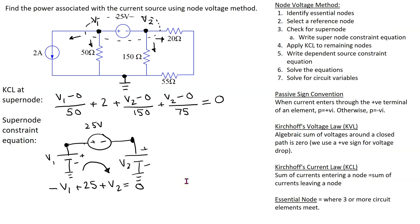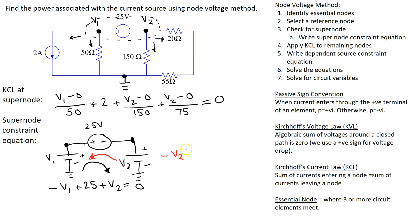When applying KVL to the super node, the assumed direction of the current does not matter. For instance, starting with the opposite direction: going from minus to plus at v2 gives minus v2; going from minus to plus gives minus 25; and going from plus to minus gives plus v1 equals zero.